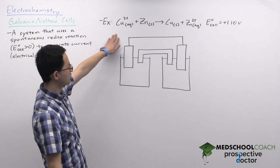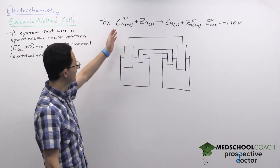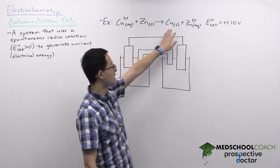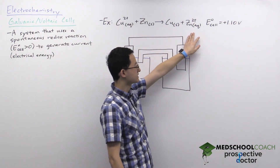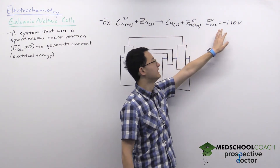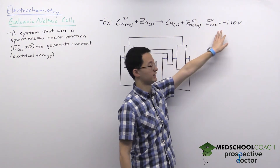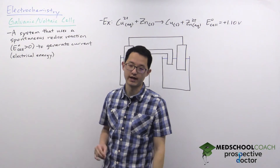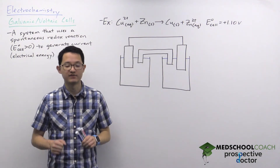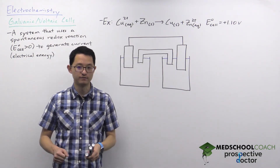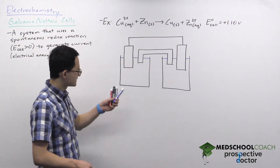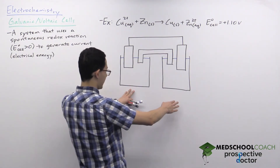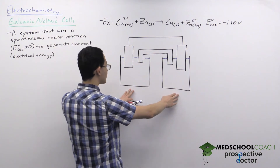To look at an example of a galvanic cell, we'll examine this reaction: copper cation combines with zinc solid to form copper solid and zinc cations, with a positive standard cell potential. This is required because we need a spontaneous redox reaction, which must have a positive cell potential. The setup uses two half-cells connected by a wire and a salt bridge.